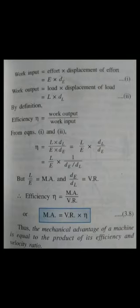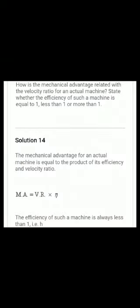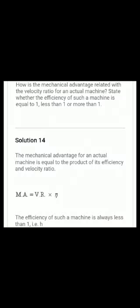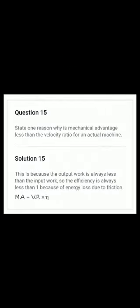Question number fourteen: how is mechanical advantage related to velocity ratio? Same as what we studied — MA equals VR multiplied by eta (efficiency). Question number fifteen has a similar kind of question.